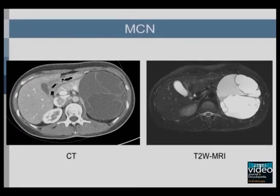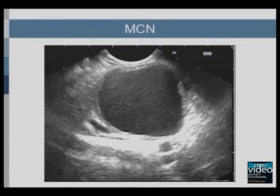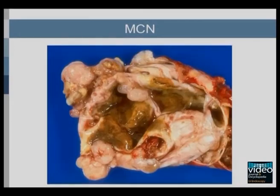Mucinous cystic neoplasms are predominantly macrocystic. Septations may be present, which may be more conspicuous on MRI. Peripheral calcification on CT is nearly specific for mucinous cystic neoplasm. On EUS, mucinous cystic neoplasm may be unilocular or septated. The resected specimen may also be unilocular or septated, with the internal surface glistening with mucin. Mural nodules are also seen.